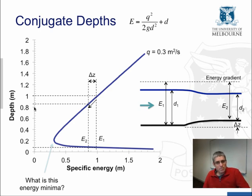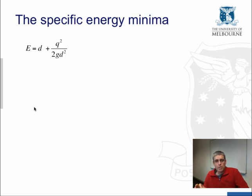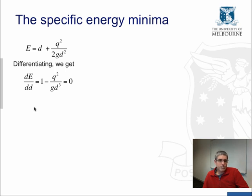So that's the specific energy curve. But really the interesting feature here is this minima. What is this energy minima and why do we have one? Let's now concentrate on the minima and think about what it means, first mathematically. If we differentiate the specific energy curve, we get dE/dd = 1 - q²/(gd³). And for the minima, this equals zero, so dE/dd = 0. And at the minima, that means q² = gdc³, or the critical velocity Uc = √(gdc).